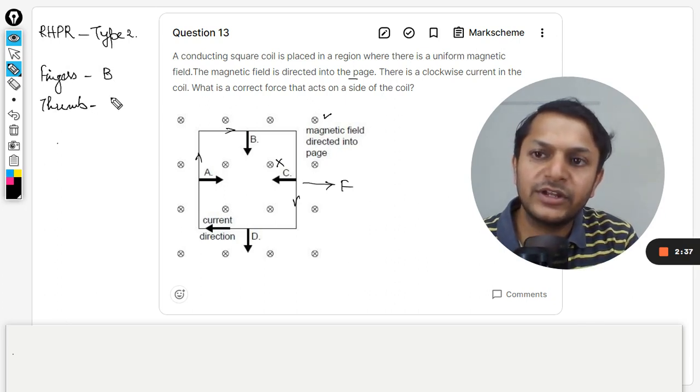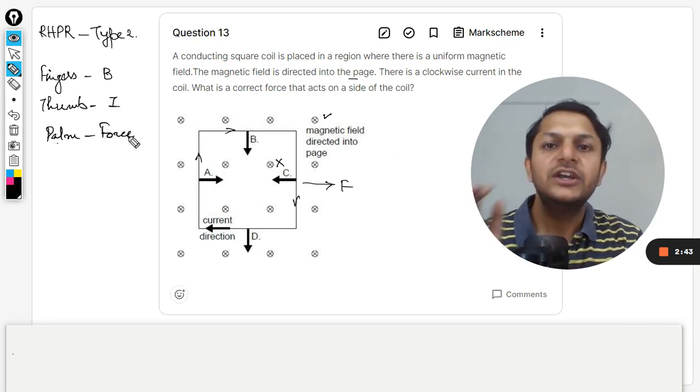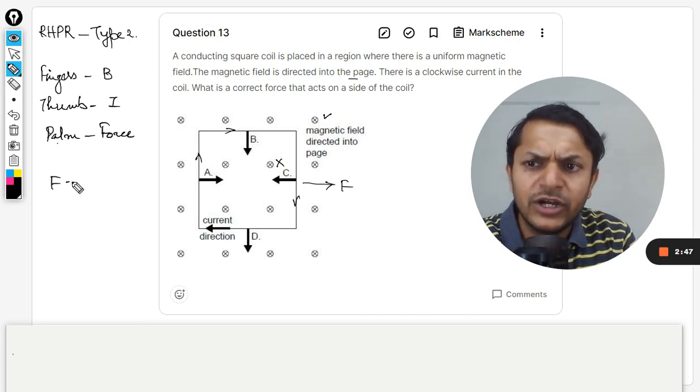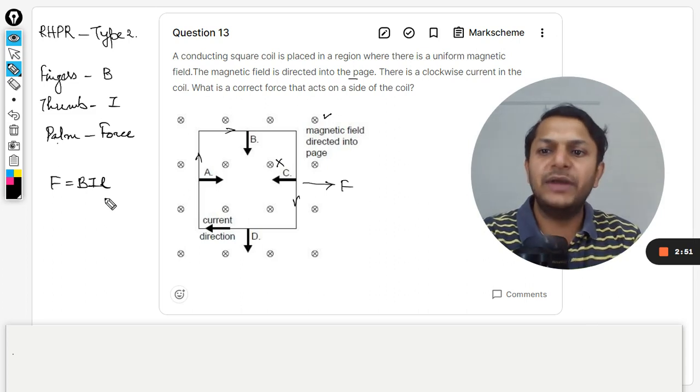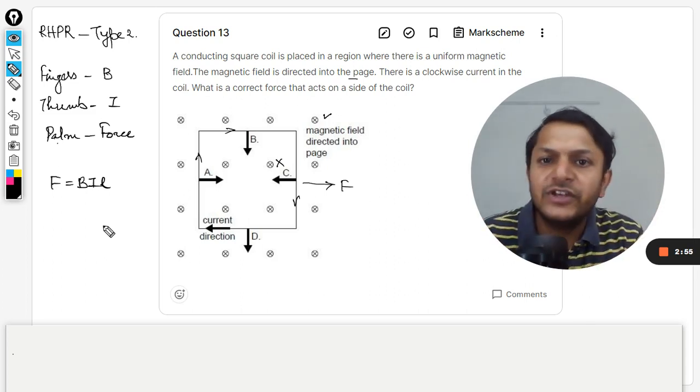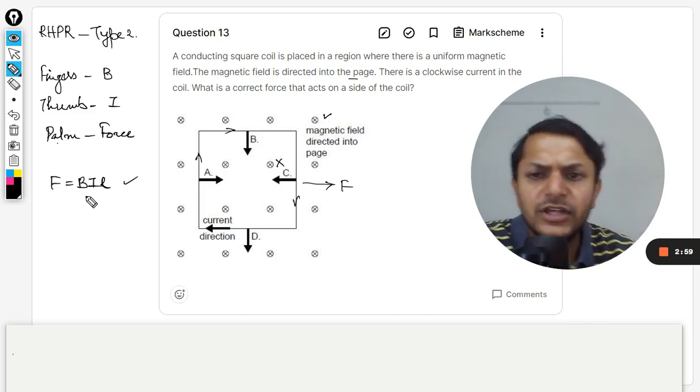I am going to write it here. Fingers will be pointing towards the magnetic field, thumb will be pointing towards the current, and palm will be giving you the force which is on the current carrying wire. And you must also be knowing about the magnitude for this, it is BIL.